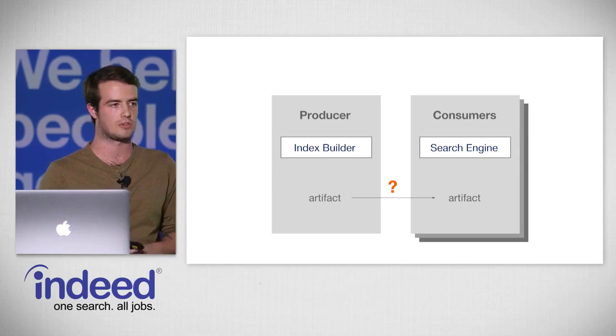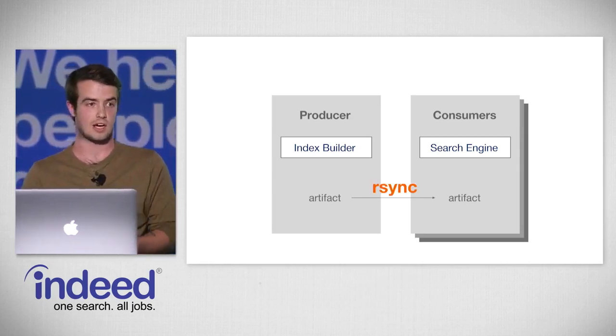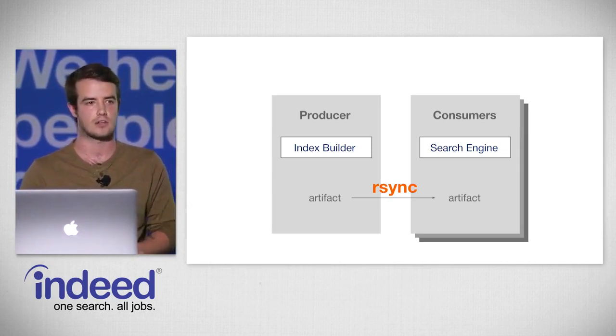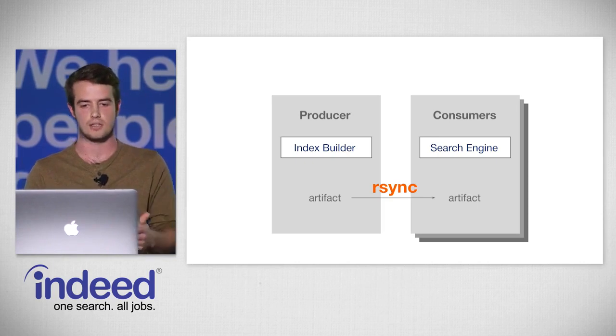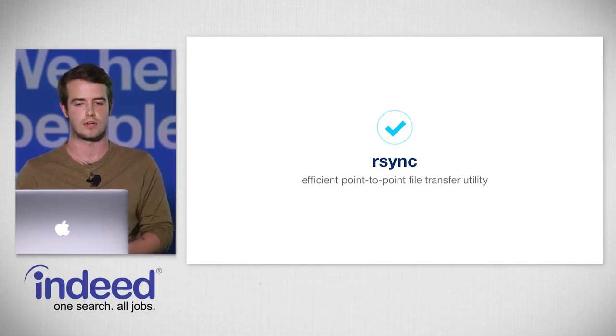We still needed a way to ship data between our producer and consumer machines, and we decided on the simple utility rsync. It's an efficient point-to-point file transfer utility that can mirror data between directories on one server and another, and it only copies the differences between those two directories.